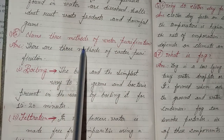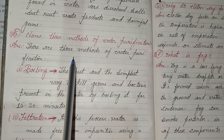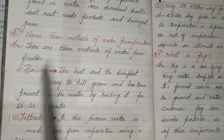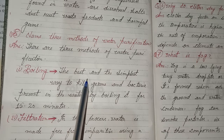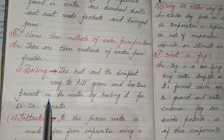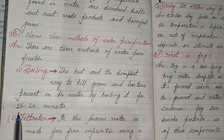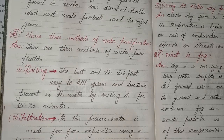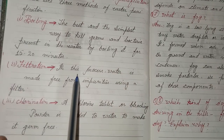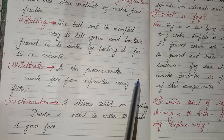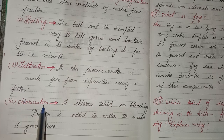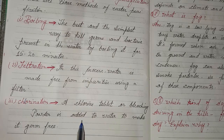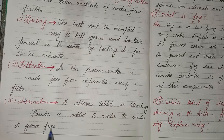Fifth question: Name three methods of water purification. Answer: There are three methods of water purification. First, boiling — the best and simplest way to kill germs and bacteria present in water by boiling it for 15 to 20 minutes. Second, filtration — water is made free from impurities using a filter. Third, chlorination — a chlorine tablet or bleaching powder is added to water to make it germ-free.